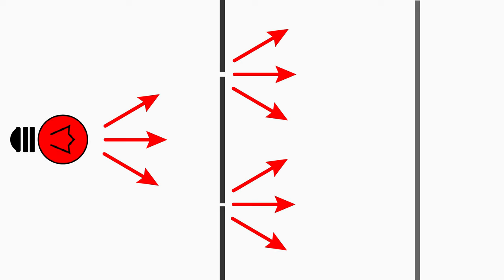Now what do you observe on the screen when you switch on the light source? The light moves to the double slit and passes through the two slits.